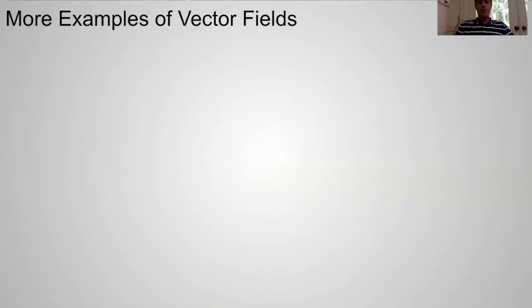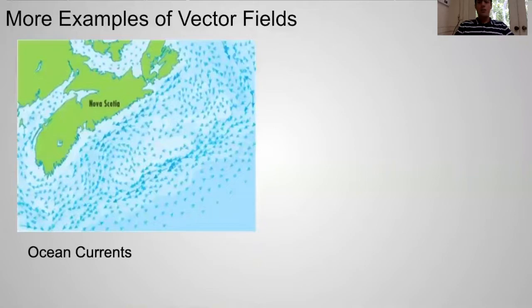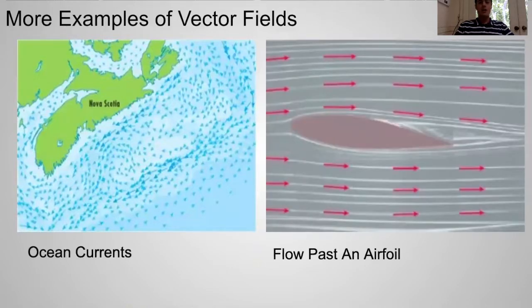Here are more examples of vector fields. Ocean currents, where the vectors are representing the current patterns, and flow past an airfoil, where the vectors are showing the velocity patterns.